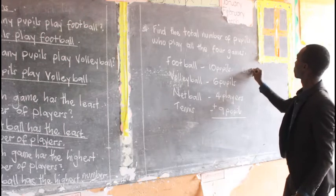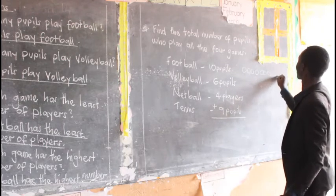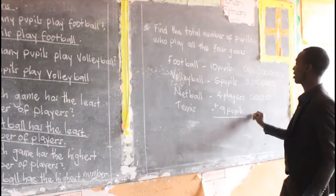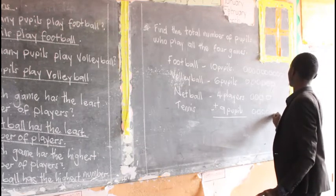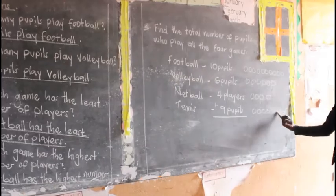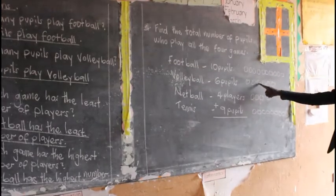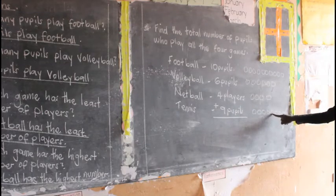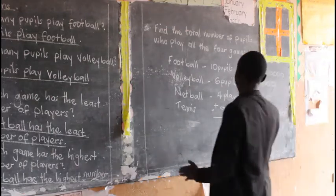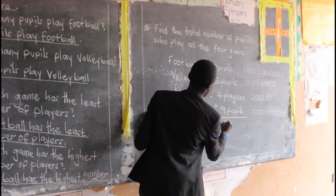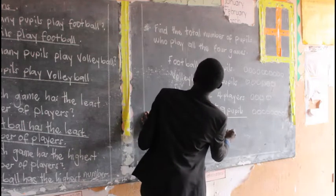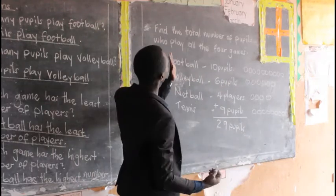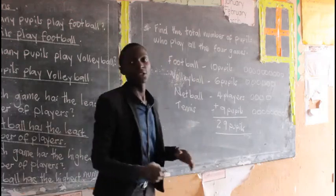When you add: 10 players plus 6 players plus 4 players plus 9 players. Adding them all together we get 29. The total number of people who play all four games is 29 pupils.